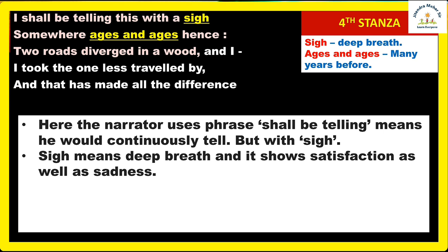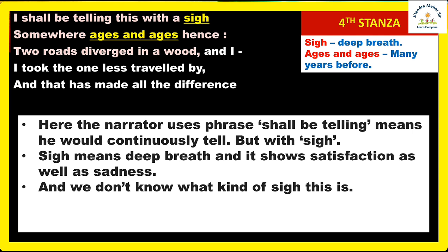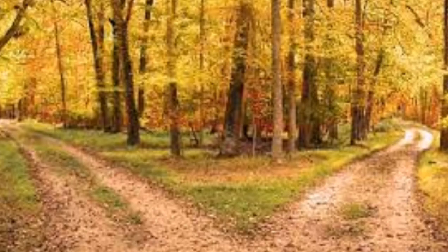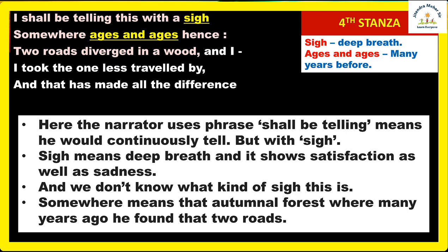The word 'sigh' creates a slight confusion — a sigh can express both satisfaction and sadness. It is a pun and a figure of speech used cleverly here because we don't know exactly what happened to the writer. 'Somewhere' refers to that autumnal forest where many years ago he found the two diverging roads. He will always tell that story — that he once stopped in an autumnal forest where two roads lay before him.